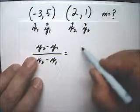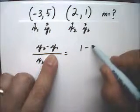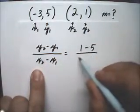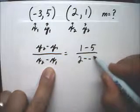So y2 is 1, y1 is 5, x2 is 2, and x1 is minus 3.